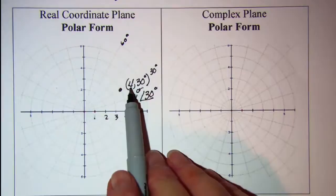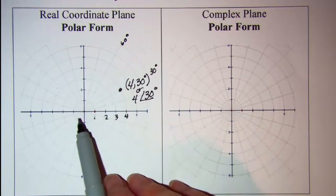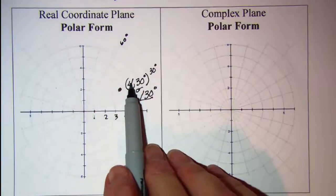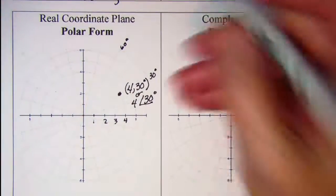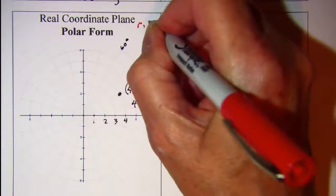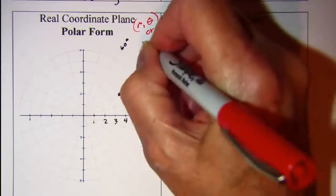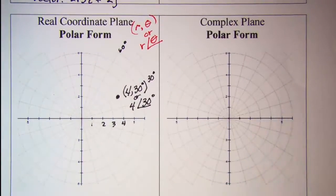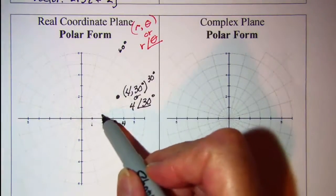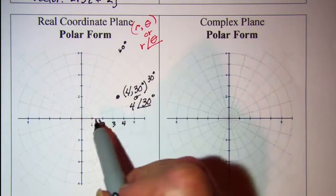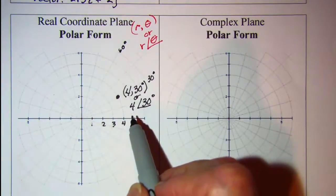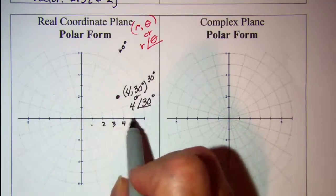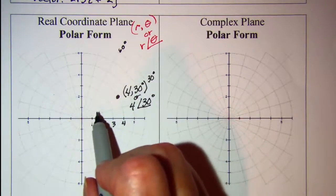But basically what this is giving us is the distance from the center here out to the point. It's 4 units and so that's usually r. So in polar form we write it as (r, θ) or r∠θ. And then θ is our angle from this positive—it would be the positive x-axis if we were on the real coordinate plane in the rectangular form—but this horizontal axis to the right here. So the angle that's formed by that axis and the vector.